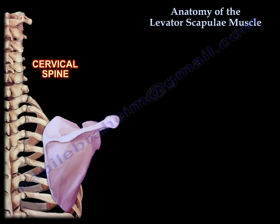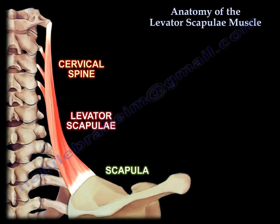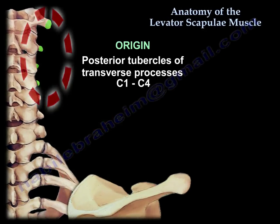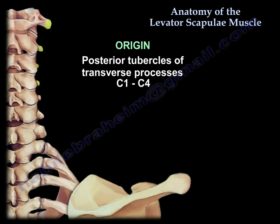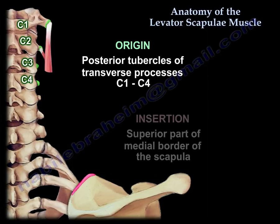Levator Scapulae anatomy: the origin is from the posterior tubercles of the transverse processes of C1 to C4, and the insertion is into the superior part of the medial border of the scapula.